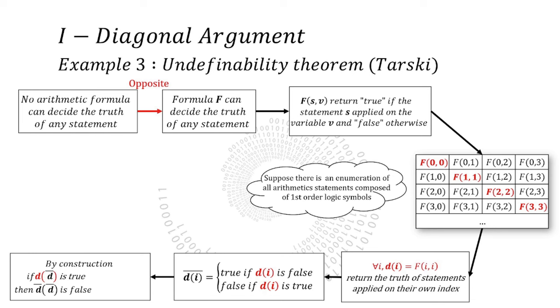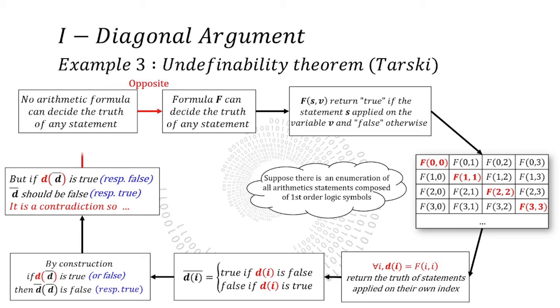Like for the halting problem, we end in the same situation, whatever is equal counter D. We end in a contradiction, so the assumption was false. And we can state that no arithmetic formula can decide the truth of any statement. Now that you have in mind the scheme of diagonal argument, let's try to understand it on another level of abstraction.